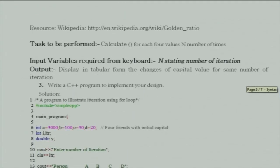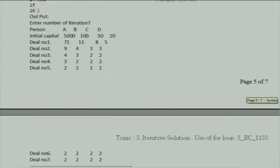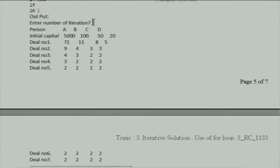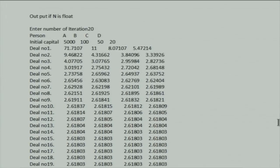We tried to formulate the program. Initially we designed it using arrays, but members objected since it's a for-loop problem. It was updated to use fixed variables A, B, C, D with simple lines of code. The output is very interesting — when running for 7 iterations with integer capital, after the third or fourth iteration all values merge to the same number regardless of starting capital. With floating point, convergence happens after the thirteenth iteration.